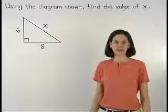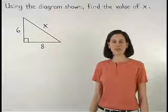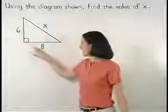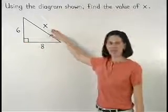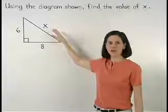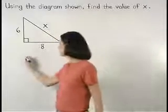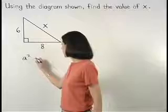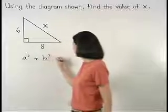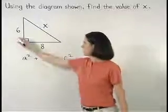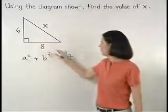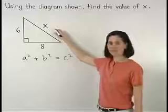The Pythagorean theorem states that the sum of the squares of the lengths of the legs of a right triangle is equal to the square of the length of the hypotenuse, or a squared plus b squared equals c squared, where a and b are the legs of the right triangle and c is the hypotenuse.